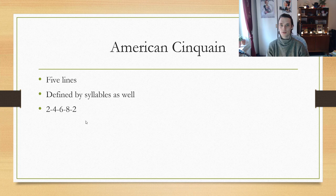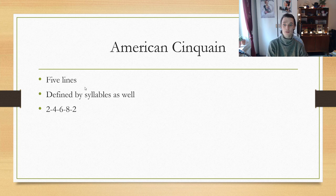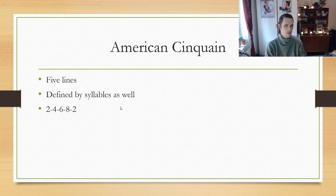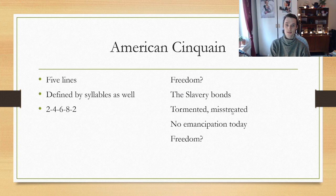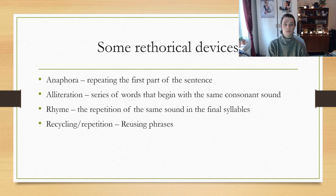Next we have something called the American Cinquain. For those who know a little French, 'cinq' means five — and yes, it has five lines, also defined by syllables. It follows a two-four-six-eight-two syllable schedule. Here's how it looks: 'Freedom / The slavery bonds / Tormented, mistreated / No emancipation today / Freedom.' Two syllables, four syllables, six syllables, eight syllables, back to two. That's how it works.